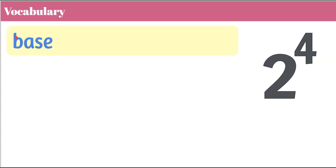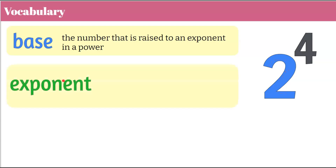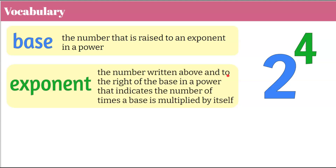Let's review some vocabulary, making sure that we understand the parts of a power. A base is the number that is raised to an exponent in a power — so right here in this power, the 2 is the base. An exponent is the number written above and to the right of the base in a power, and it indicates the number of times a base is multiplied by itself. Here, 2 is our base and 4 is our exponent, so 4 represents multiplying 2 by itself 4 times: 2 × 2 × 2 × 2.